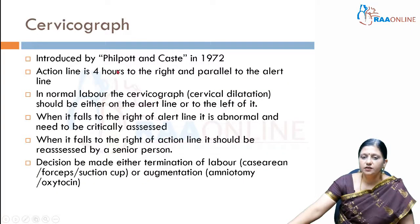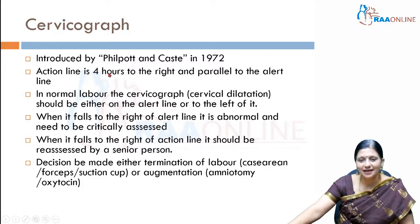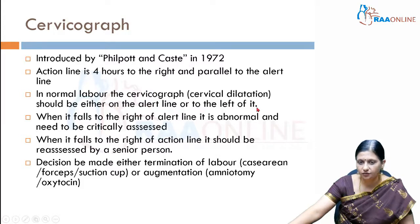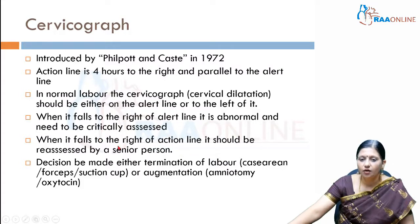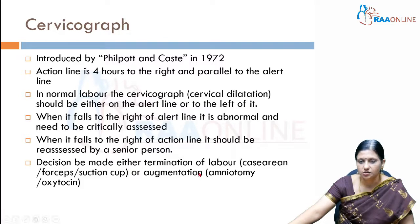It was introduced by Philpott and Castle in 1972, and the action line is four hours to the right and parallel to the alert line. In normal labor, the cervicograph or cervical dilatation should be either on the alert line or to the left of it. When it falls to the right of the alert line it is abnormal and we need to critically assess it, and when it falls to the right of the action line it should be reassessed by a senior person and a decision should be made regarding termination of labor once the action line has been crossed.